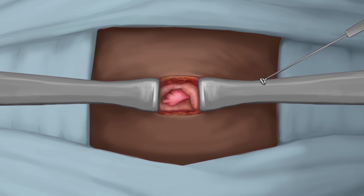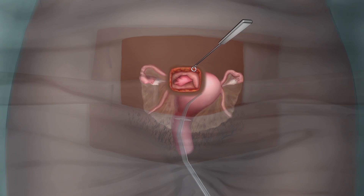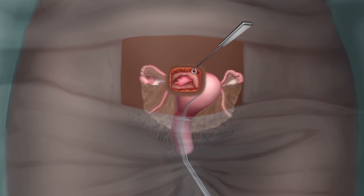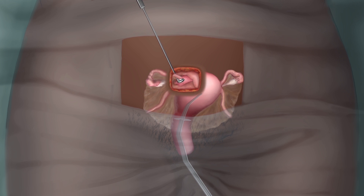Gently use a tubal hook to bring the fallopian tube into view. Starting at the fundus, slide the hook down the posterior of the uterus as a guide, then turn the tubal hook to scoop up around the lateral side.